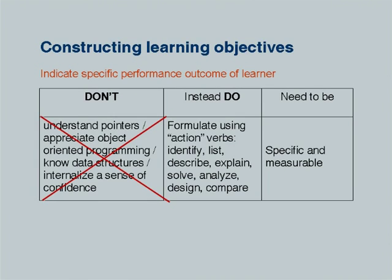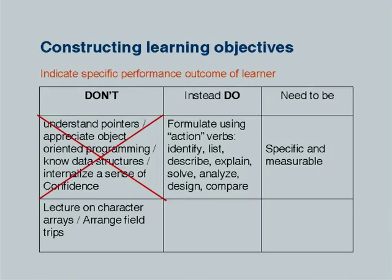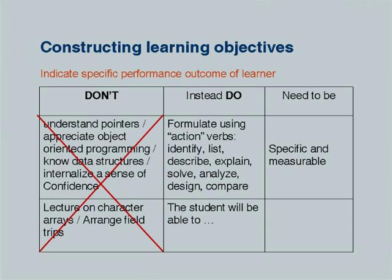Learning objectives need to be specific and measurable. One more thing to avoid: when we make notes for class we often say 'today I will arrange a lecture on character arrays' or 'I will arrange a field trip.' These are also not learning objectives because they have the teacher in mind, not the student. Instead, what we want to say is: 'the student, at the end of this lesson, will be able to do something.' Learning objectives must be concerned with the learner, not the teacher. Colleagues from Mission 10x will be talking about learner-centric instruction in the next few days.